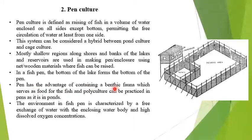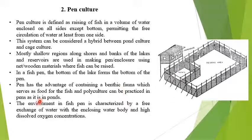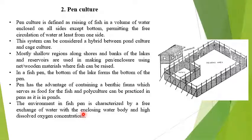Pen culture has the advantage of containing benthic organisms which serve as food for the fish. Polyculture — mixed culture, composite culture, or various species combinations — can be practiced in the pen. The pen environment is characterized by free exchange of oxygen and ecological conditions with the surrounding water body, resulting in high dissolved oxygen concentration.